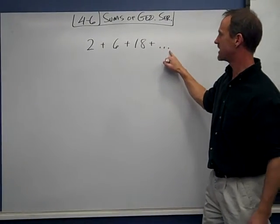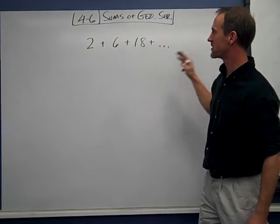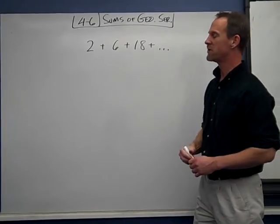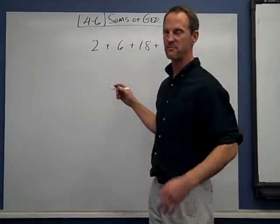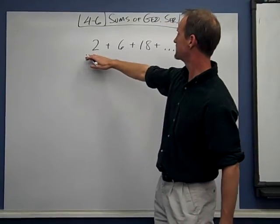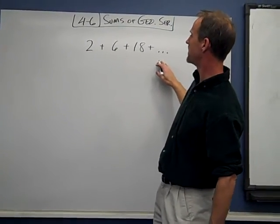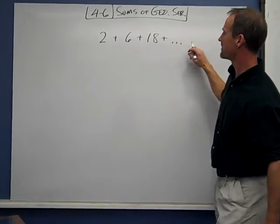The dot, dot, dot here means that it's going on forever. So the way we would represent this with summation notation is as follows. You can definitely pause this and come back to it in a second. How would we write this using summation notation if it goes forever?